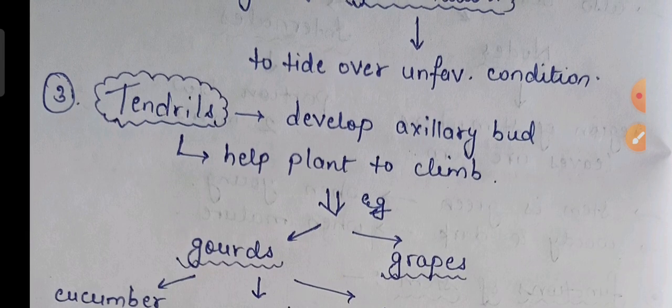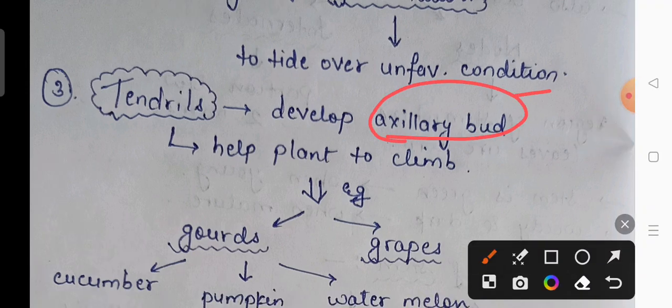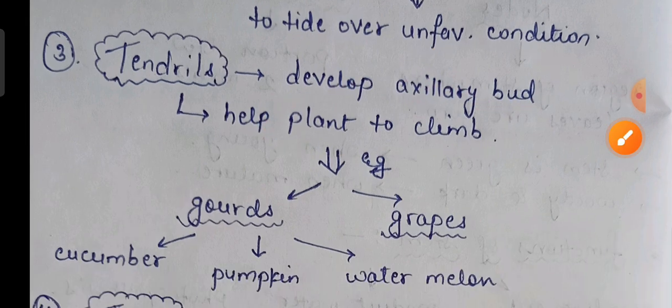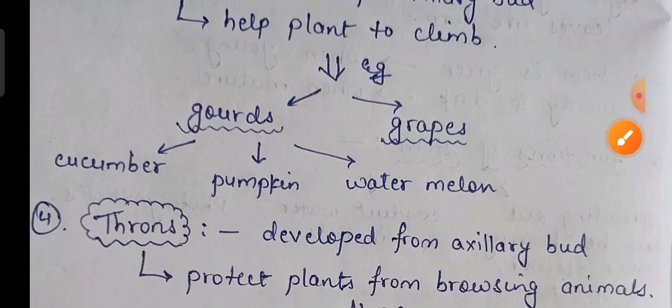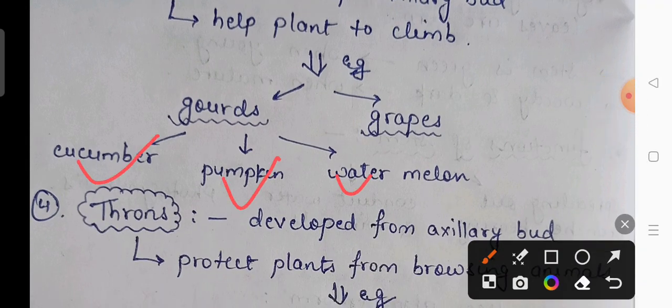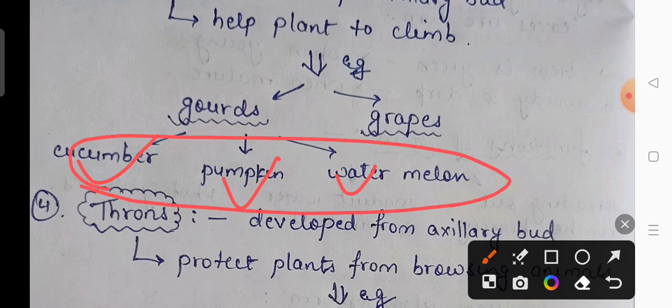The third stem modification is tendrils. Tendrils are basically axillary buds that help the plant to climb, as seen in gourds and grapes. Common examples of gourds include cucumber, pumpkin, and watermelon — all of these have tendrils. Tendrils are made of permanent tissue, specifically collenchyma, which is a flexible tissue that provides flexibility so the tendrils can move in any direction and provide support.